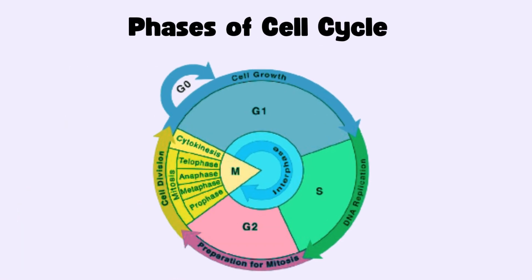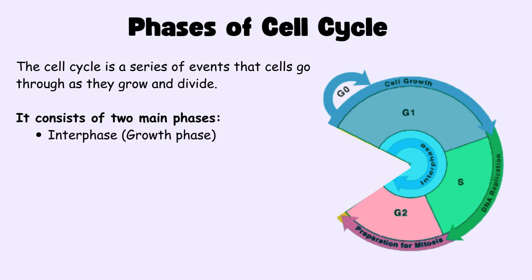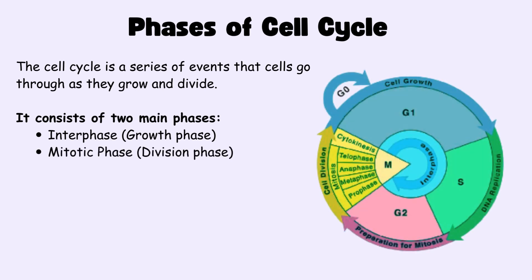What are the phases of the cell cycle? The cell cycle is a series of events that cells go through as they grow and divide. It consists of two main phases: interphase, also called the growth phase, and the mitotic phase, which is the division phase. Each of these phases has its own important steps and responsibilities.